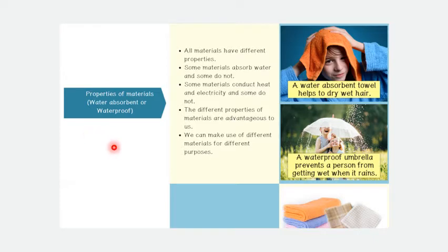Okay people, we go to first properties of materials: water absorbent or waterproof. First of all, we must know all materials have different properties. Some materials absorb water, and some do not. Some materials conduct heat and electricity, and some do not. The different properties of materials are advantageous to us. We can make use of different materials for different purposes.